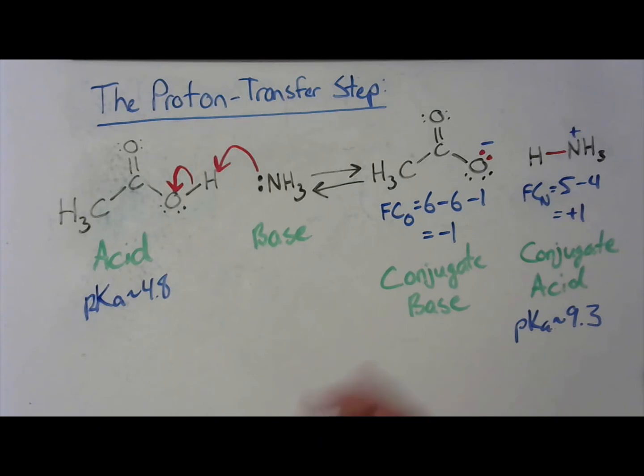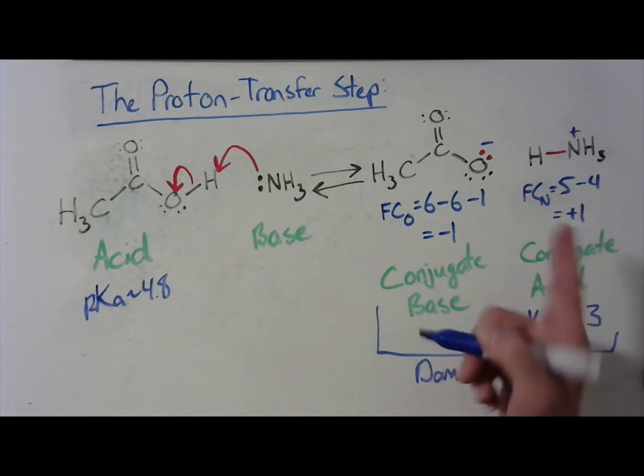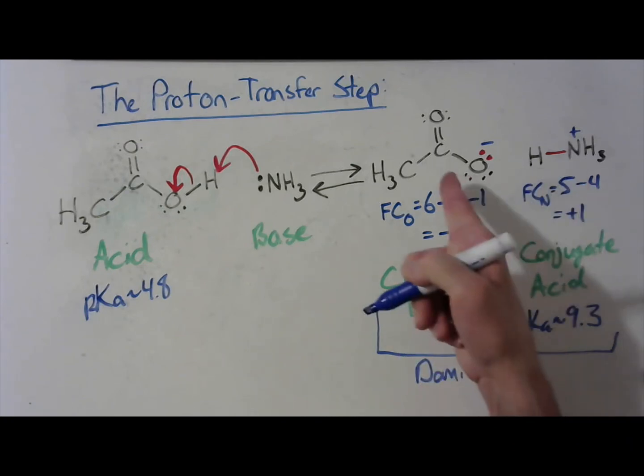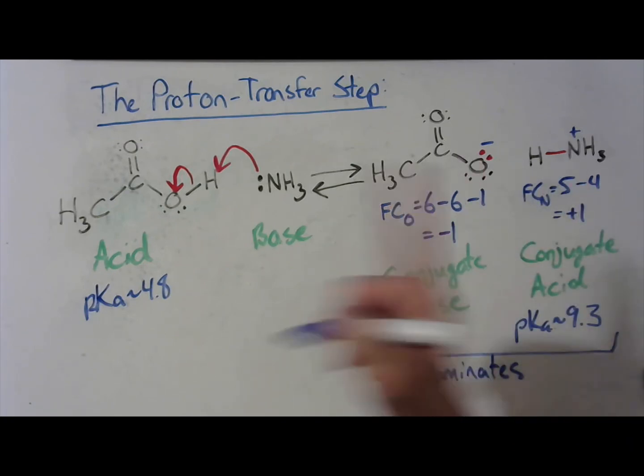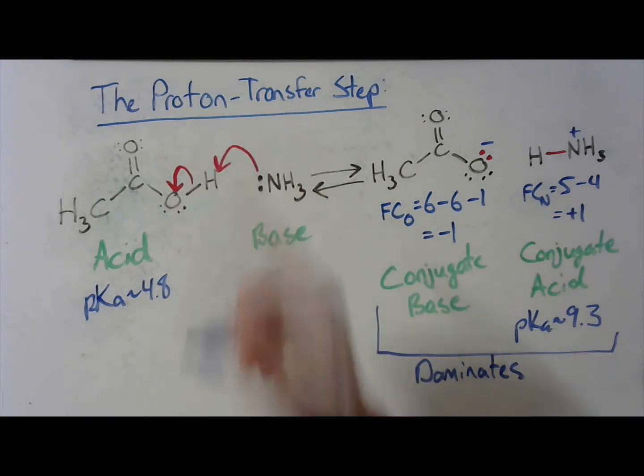Since the higher pKa acid is on the right side of the equation, this will be the side that dominates. That means that at equilibrium, there's going to be a lot more ammonium and acetate than there is acetic acid and ammonia.